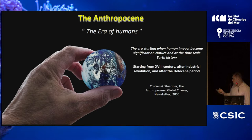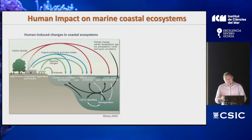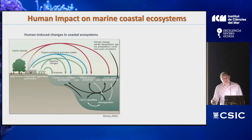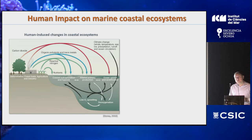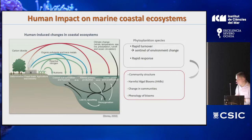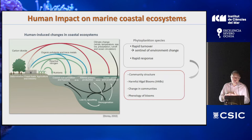Human pollution and activities on coastal sites — from industries, agriculture, development of harbors and aquacultures — have a direct impact on coastal marine ecosystems. In coastal ecosystems, we can use phytoplankton as a way to monitor these changes because phytoplankton react very quickly to environmental changes and also change very rapidly in community composition. We have a quick response to these environmental parameters. We can study how communities change, whether new harmful algal blooms develop in an area, and also the phenology of the blooms — meaning how species adapt to environmental changes that occurred over time.